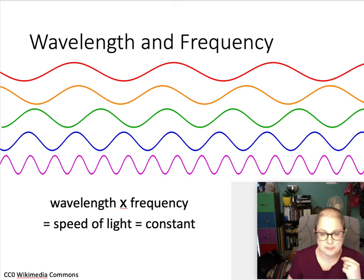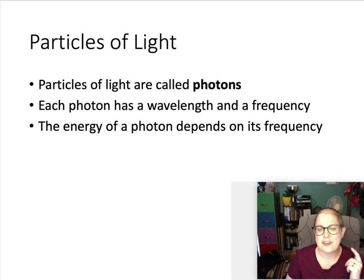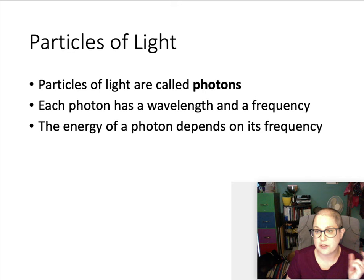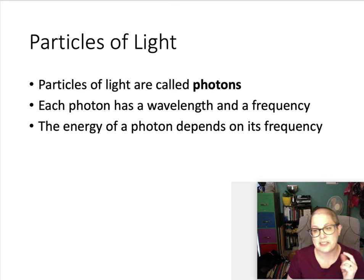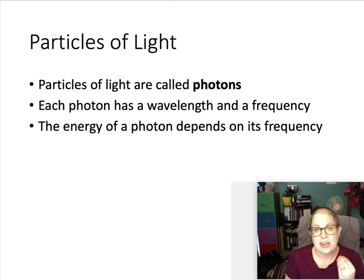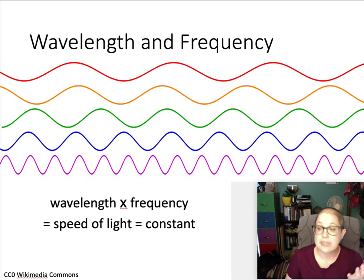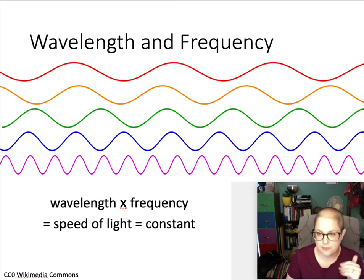We talk a lot about light's wave properties; however, light also acts like a particle, and that particle is called a photon. You treat this photon as also having a wavelength, a frequency, and an energy. The energy of that particle of light depends solely on its frequency — higher frequency means higher energy. If you go back to the colors of the visible spectrum, the highest frequency is purple, meaning that type of light has the highest energy.